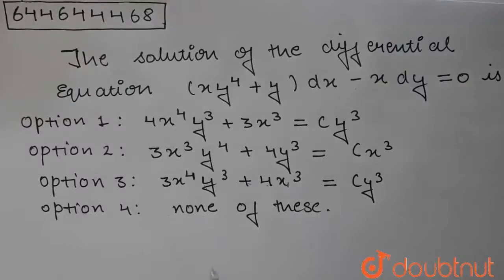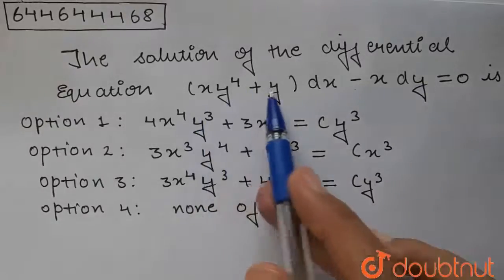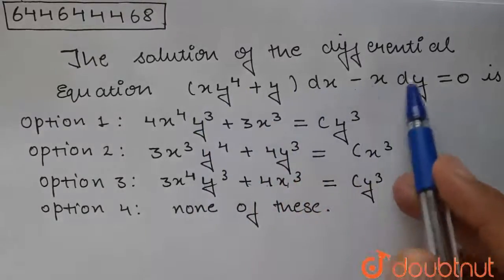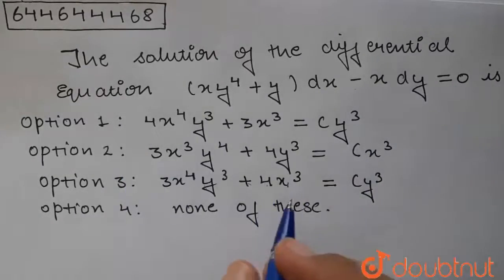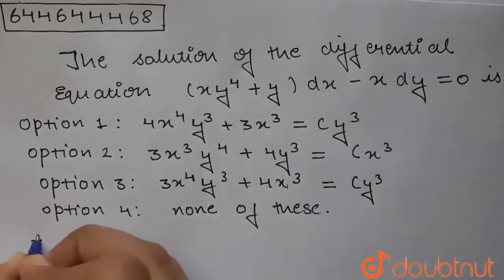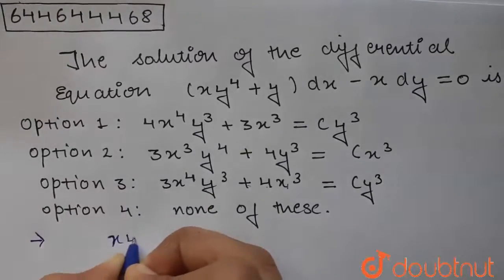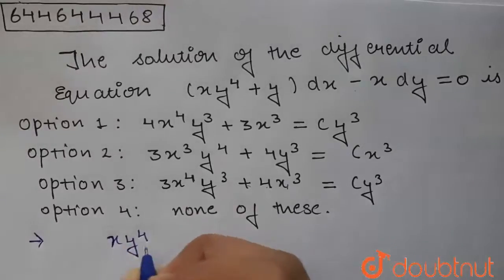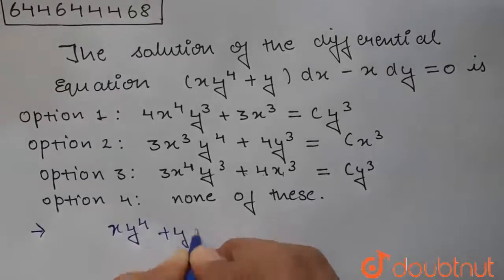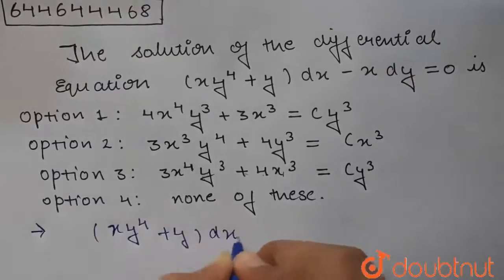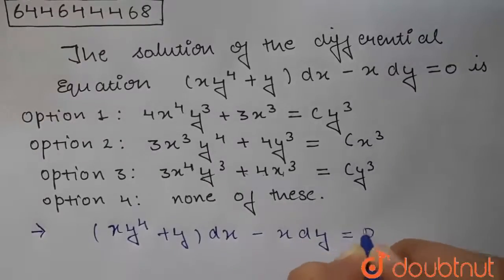Hello students, today's question is: the solution of the differential equation xy to the power 4 plus y dx minus x dy is equal to 0.